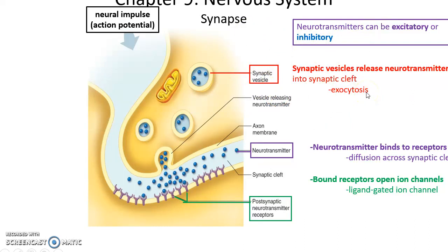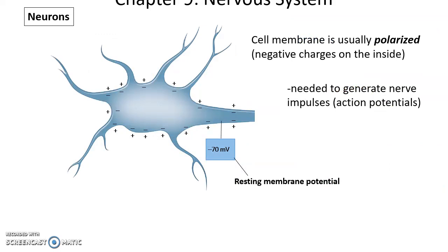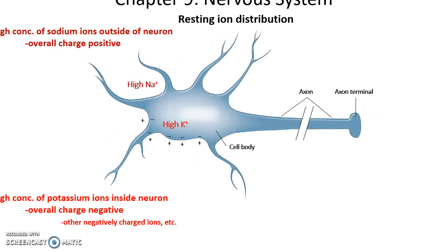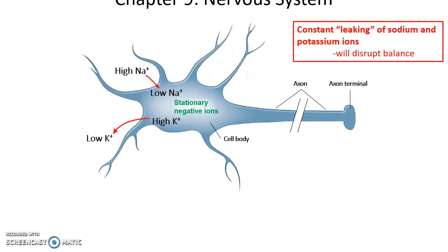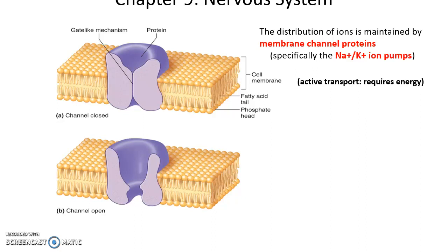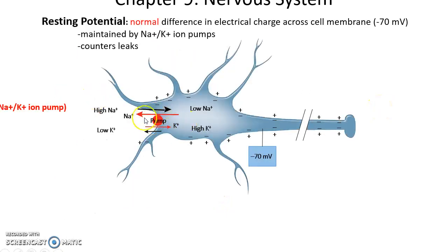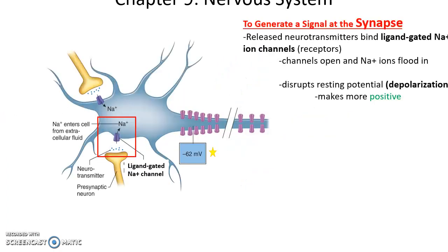Neurotransmitters can be excitatory, leading to the generation of an action potential, or inhibitory, to prevent it. The cell membrane is normally polarized — slightly negative on the inside and positive on the outside — with a resting membrane potential of negative 70 millivolts. There is a high concentration of sodium ions outside the neuron giving it a positive charge, and a high concentration of potassium ions inside, leading to an overall negative charge. These ions are constantly leaking, so sodium constantly enters and potassium constantly leaves. Sodium-potassium ion pumps perform active transport, requiring energy, to reestablish the resting potential by pumping sodium out and potassium in.